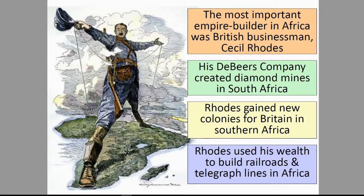The most important empire builder in Africa was British businessman Cecil Rhodes. His De Beers company created diamond mines in South Africa. Rhodes gained new colonies for Britain in South Africa, and used his wealth to build railroads and telegraph lines in Africa.